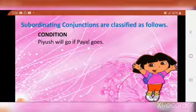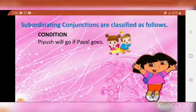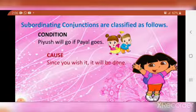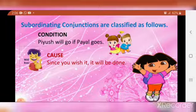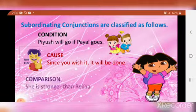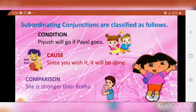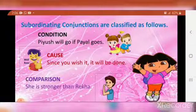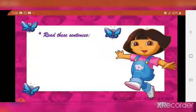Condition: 'Piyush will go if Payal goes.' 'Since you wish it, it will be done.' Comparison: 'She is stronger than Rekha.' These all are subordinating conjunctions.